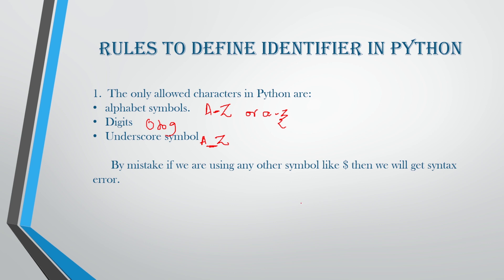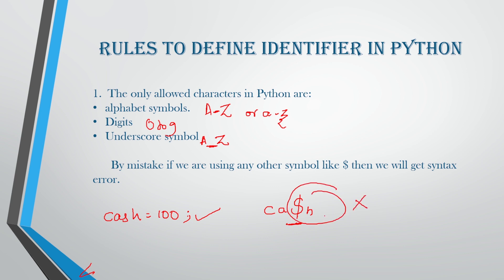If by mistake you are using any other symbol like dollar, then there will be a syntax error. For example, if you have 'cash = 100' that is correct. Whereas if you use a dollar symbol — like '$cash' — then this will be a wrong identifier. So this was the first rule in Python.